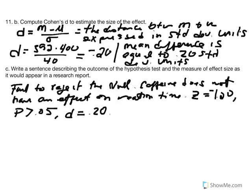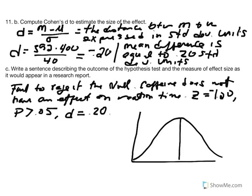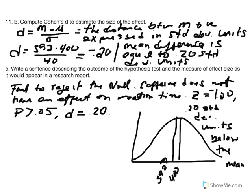To emphasize Cohen's d: given our distribution with a mean of 400 and a sample mean equal to 392, this sample mean of 392 is 0.20 standard deviation units below the mean. When we talk about standard error units it was 1.2 standard error units, but expressed back in its original unit we have a better sense of the distance — not a very significant distance. The mean difference is not large.